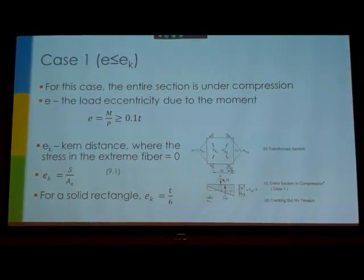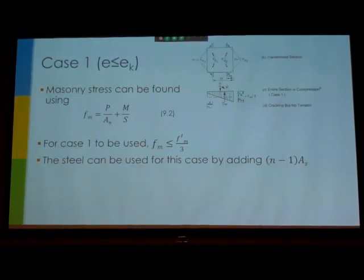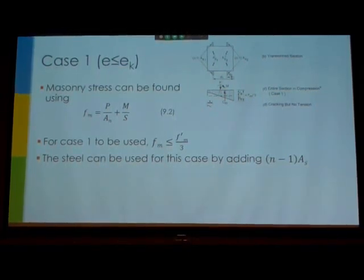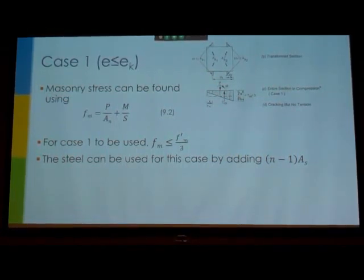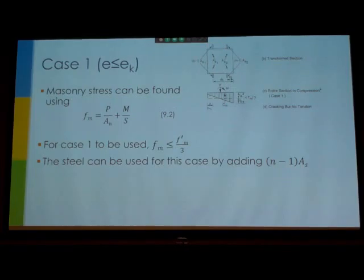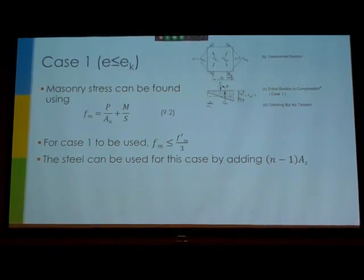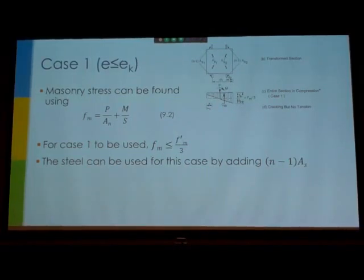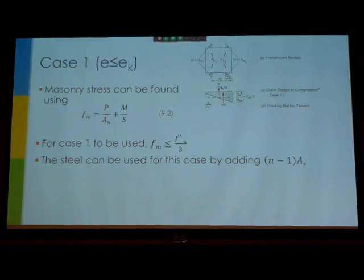Our first case here is when, if you'll see at the top, our eccentricity is less than that kern distance. So for that, once you know you're in this region and we're plotting out this region, you can find the masonry stress using this equation, p over a plus m over s. To use this region of design, you need to be within the first third of your masonry stress. So once you have more than a third of your masonry stress, you're not allowed to use this region. It has to do with minimums and making sure that it won't buckle.